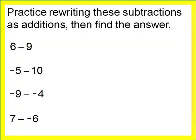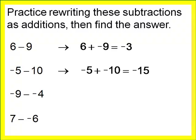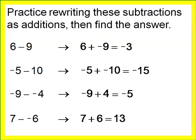Our first problem is six minus nine — rewrite it as six plus negative nine, and get an answer of negative three. Rewrite negative five minus ten as negative five plus negative ten, and get an answer of negative fifteen. Rewrite negative nine minus negative four as negative nine plus positive four, and get an answer of negative five. Rewrite seven minus negative six as seven plus positive six, and get an answer of positive thirteen.